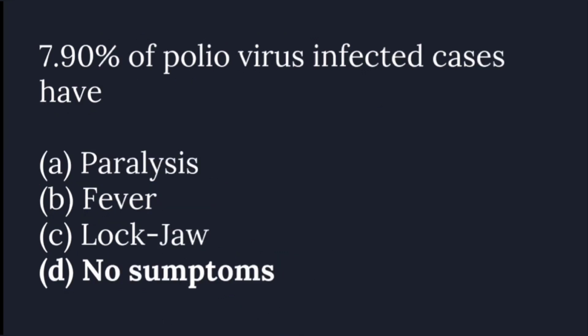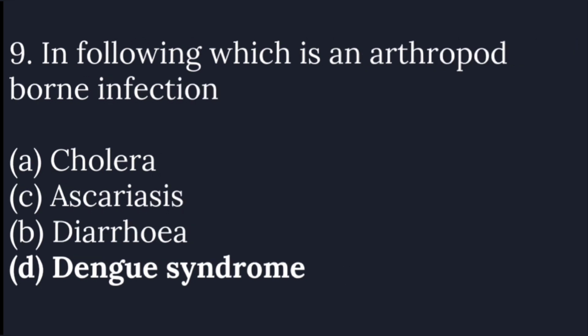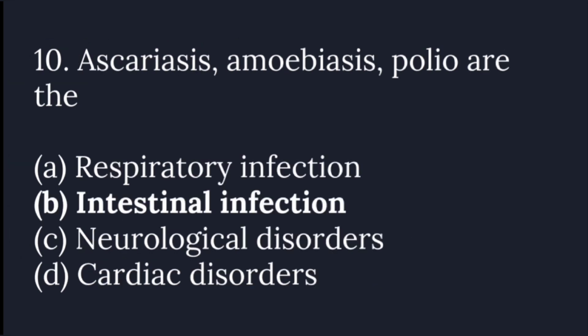90% of poliovirus-infected cases have no symptoms. Which of the following is not an intestinal infection? The answer is Dengue syndrome. Which is an arthropod-borne infection? The answer is Dengue syndrome. Ascariasis, MEBS, and polio are intestinal infections.